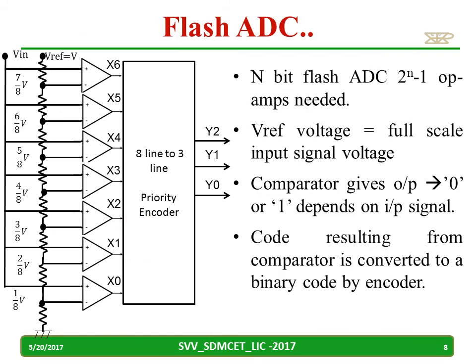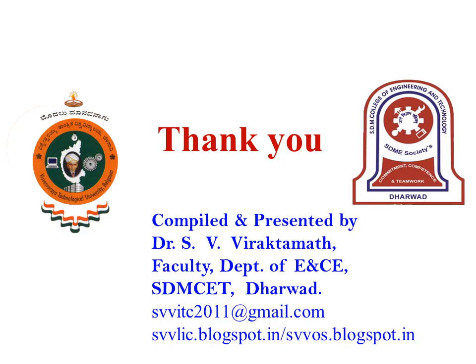An N-bit Flash ADC needs 2 raised to N minus 1 op-amps, and V reference is usually set to the full scale input signal voltage. The comparator outputs X0 to X6 will be 0s or 1s, and based on the number of 1s, the 8-line to 3-line priority encoder will give outputs from 0, 0, 0 to 1, 1, 1. Thank you for watching this video.